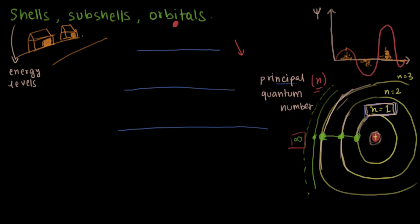Now, the interesting thing about shells and subshells is that the farther you get away, the more the value of n increases - that is, the number of n increases - the more types of subshells get introduced. Let me repeat that: the farther you get away from the nucleus, which also means the more the value of n, the principal quantum number increases, the more types of subshells get introduced. These are one, two, three shells - n equals three.